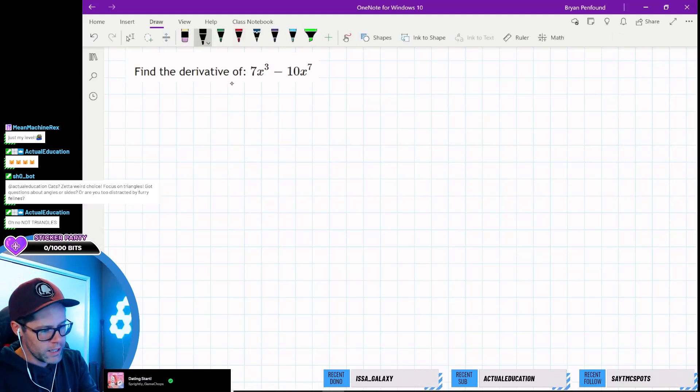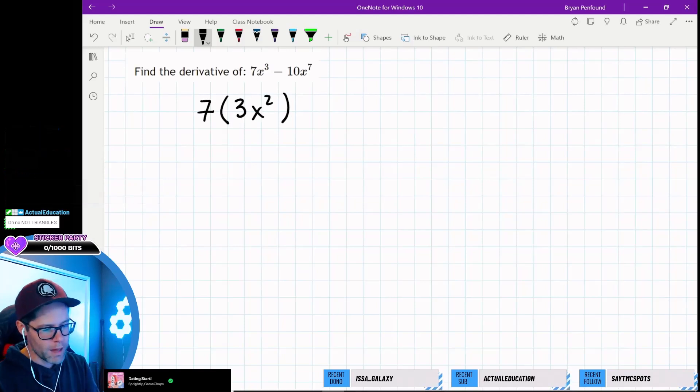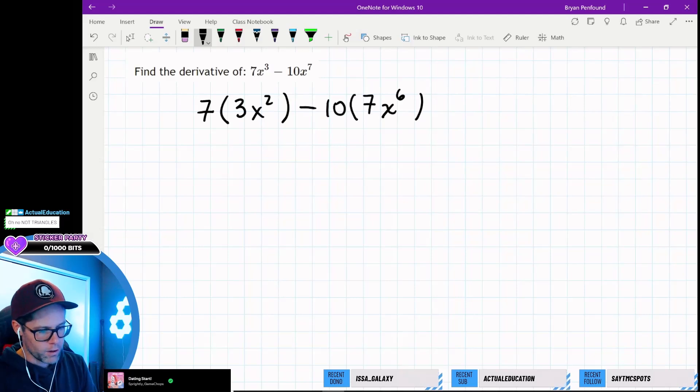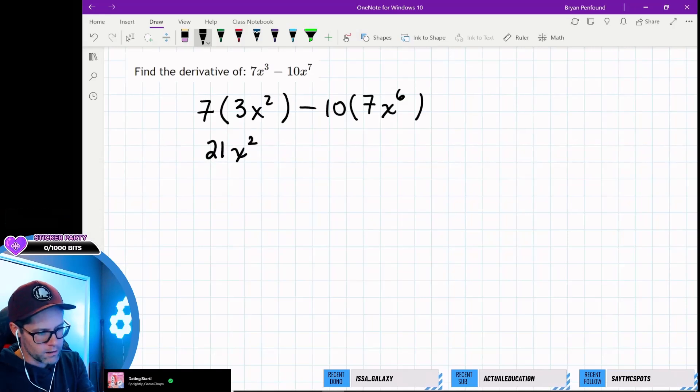We are going to leave this 7 alone, take the derivative of x cubed using the power rule, which is 3x squared. So we'll bring the 3 down, subtract 1 from that power, and we'll do the same thing over here with x to the 7. So 7 will come down, and then we'll have x to the power of 6. So our derivative would look something like 21x squared minus 70x to the power of 6.